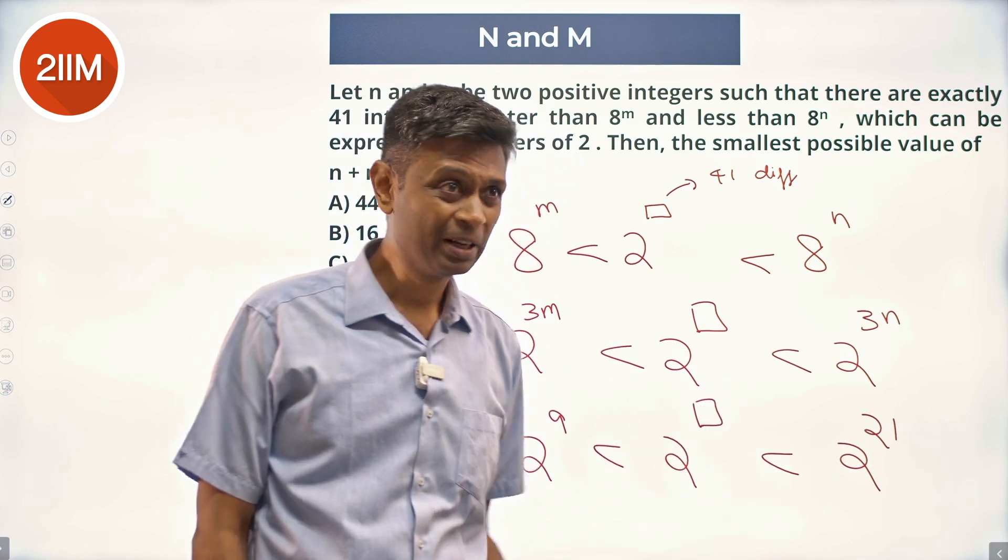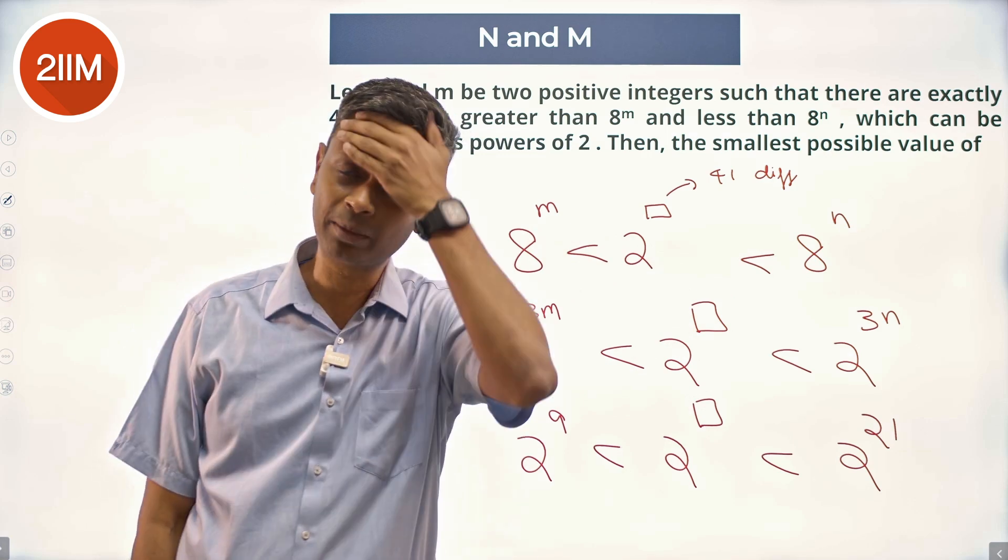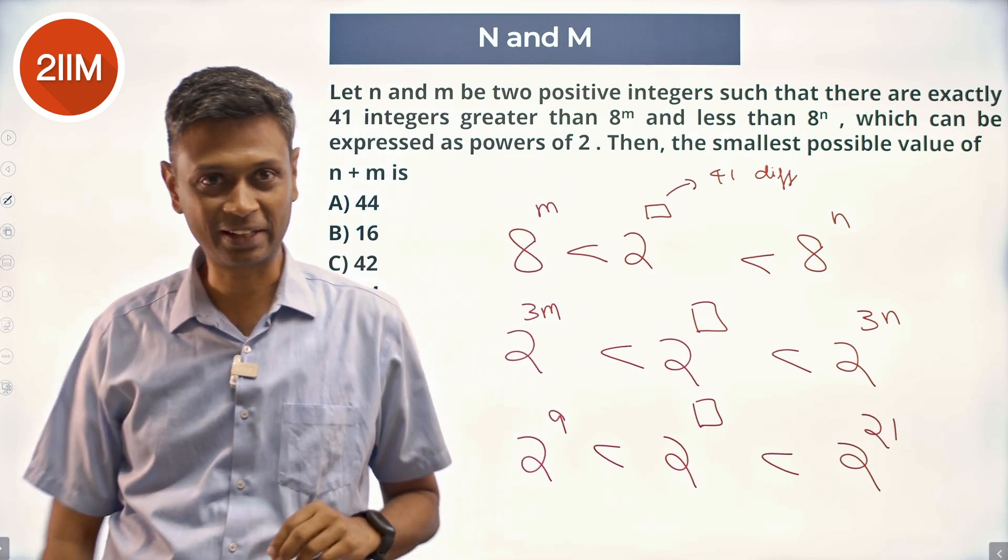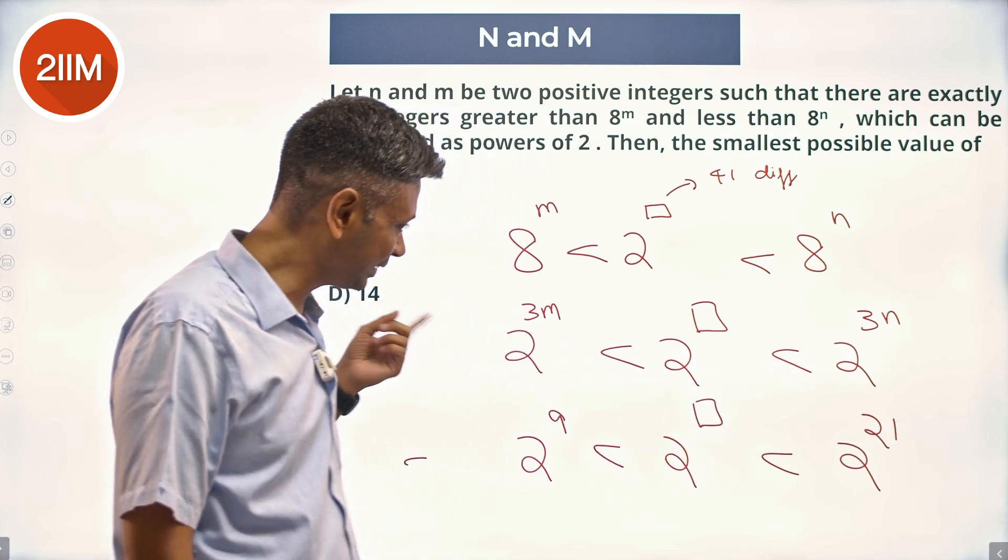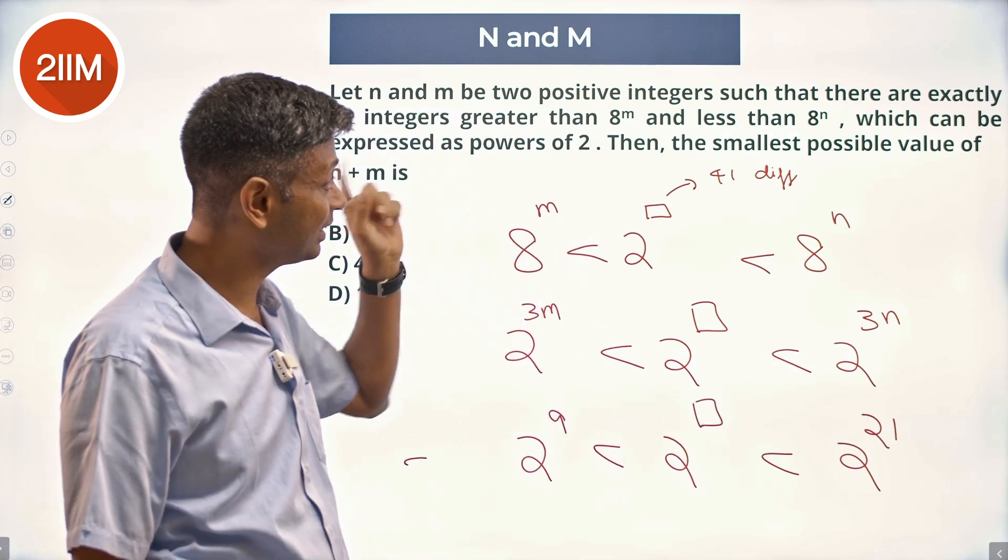It's a very important adjustment, because otherwise this 41 won't come. When I did this question, I did 3n minus 3m and said 3 times (n minus m) - how is it going to be 41? It's not 3(n-m); it is 3n minus 3m minus 1, because it is in between - greater than this and less than that.